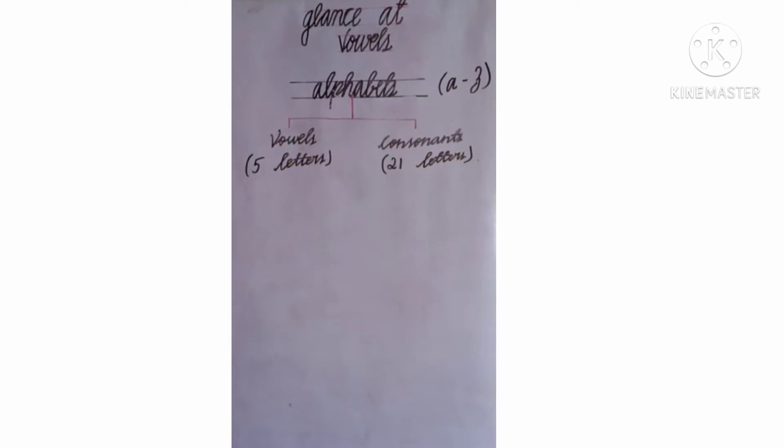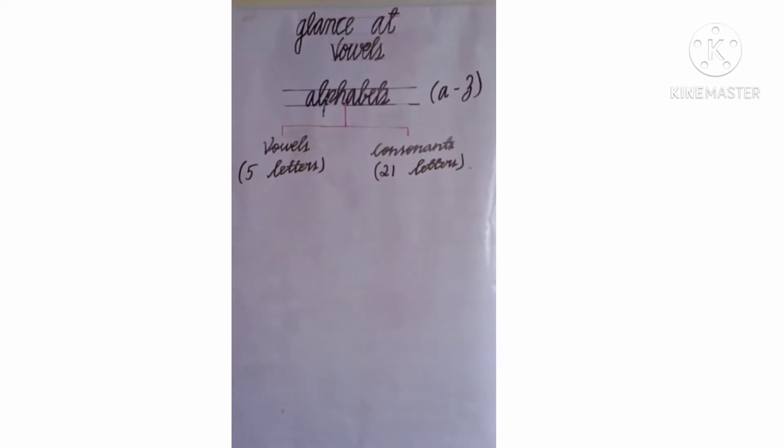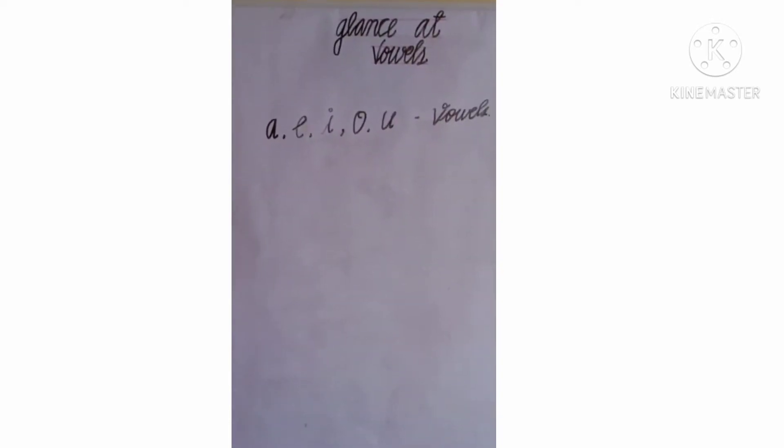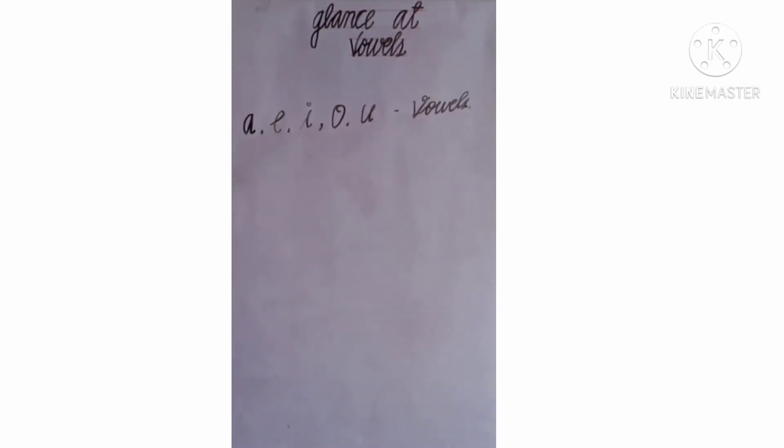Now we are going to see about vowels which contains five letters. Let's see what's the five letters. The five letters of vowels are A, E, I, O, U. Vowels. These are the five letters and the remaining letters in the alphabets are consonants.